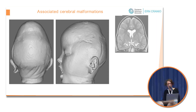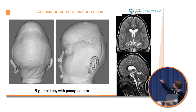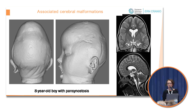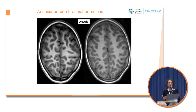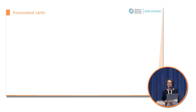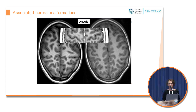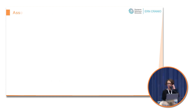Another example is a boy with pansynostosis. In one image you see hippocampal malrotation, which we actually see in many CNS malformations — it's a very nonspecific sign. But he also has dysgyria, which is abnormal sulcation and gyration without the features of pachygyria or polymicrogyria. For comparison, a normal central sulcus has a typical hand knob, but in this patient the hand knob is missing and the central sulcus is very straight.